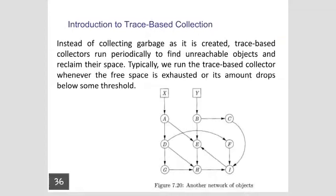This is the network object: x and y which have references to a, b, and c. Then a has references to d, e, h, g, h, and c. But whenever in future we don't have any reference to x and y, at that time all the allocated memory from a to i is to be deallocated. These are the things related to trace-based collection.